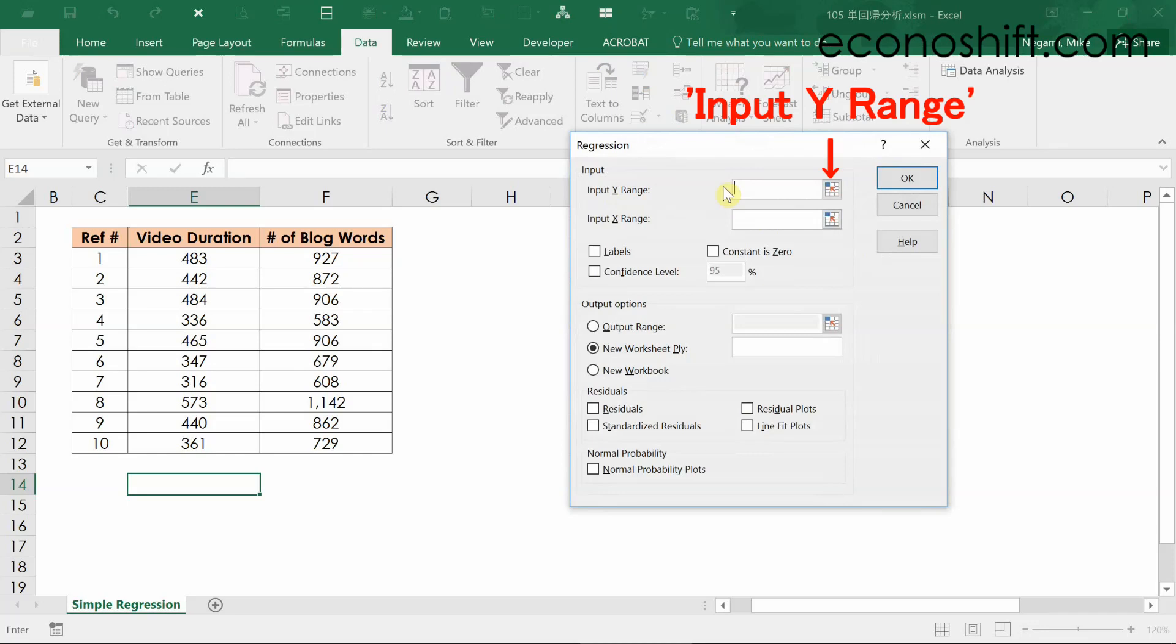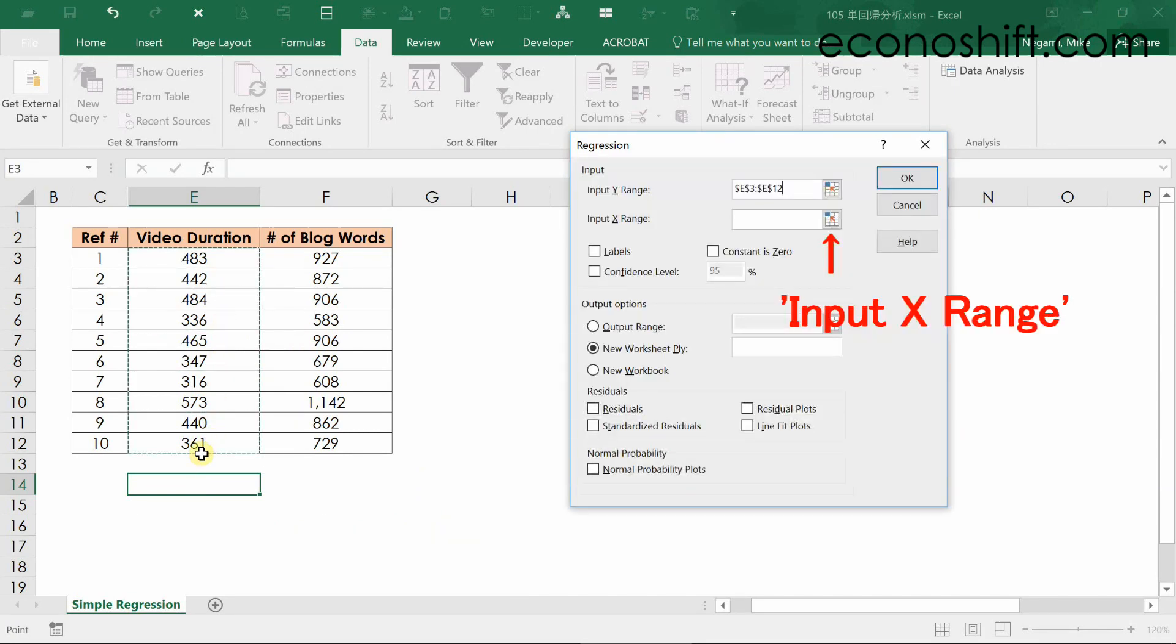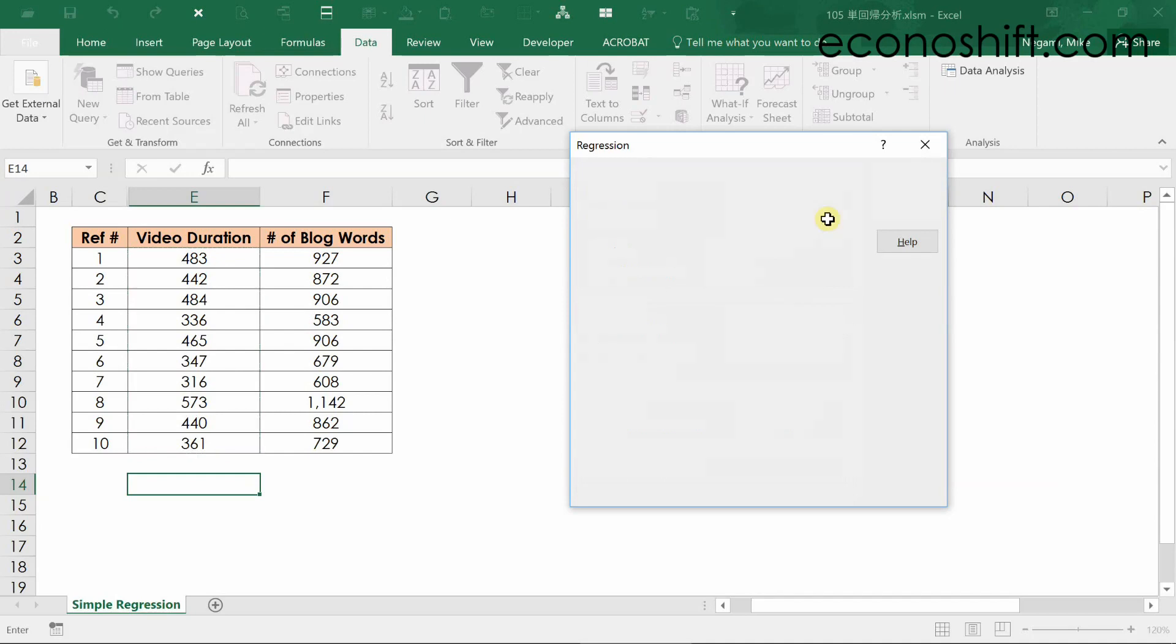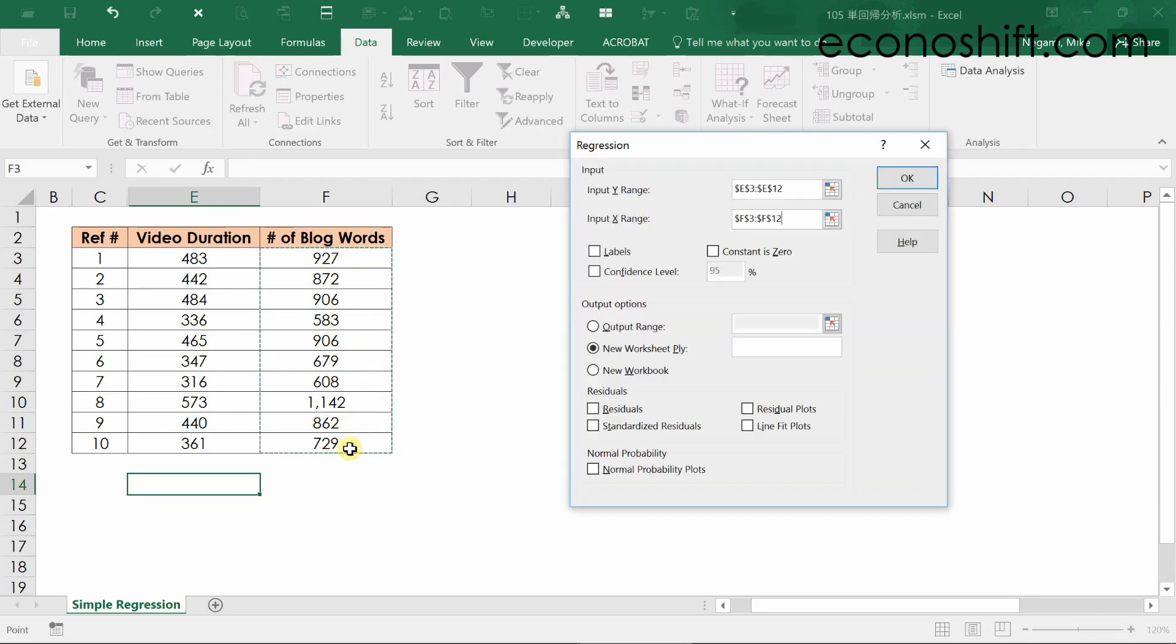In input Y range, you'll select the data of your objective variable. In my case, video duration. In the input X range, you'll select the data of your explanatory variable. In my case, it's number of blog words, and OK.